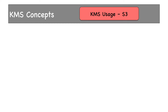In S3, encryption at rest can be provided by server-side encryption. There are three modes: SSE-S3, where we use the default AWS managed CMK like AWS/S3; SSE-KMS, where we create a CMK and provide it to S3 so it can use that CMK to encrypt or decrypt its objects; and finally SSE-C, or SSE-Customer, where we manage and provide the encryption key ourselves.